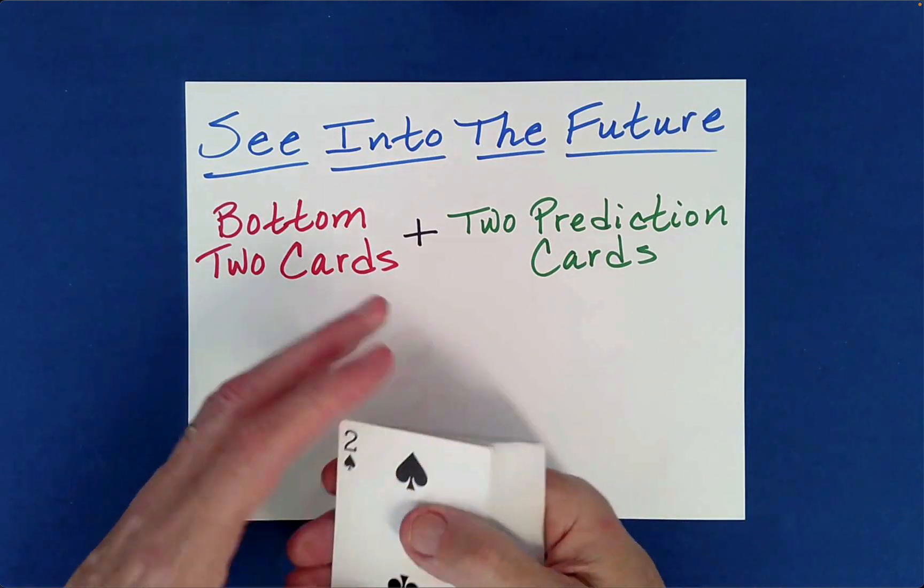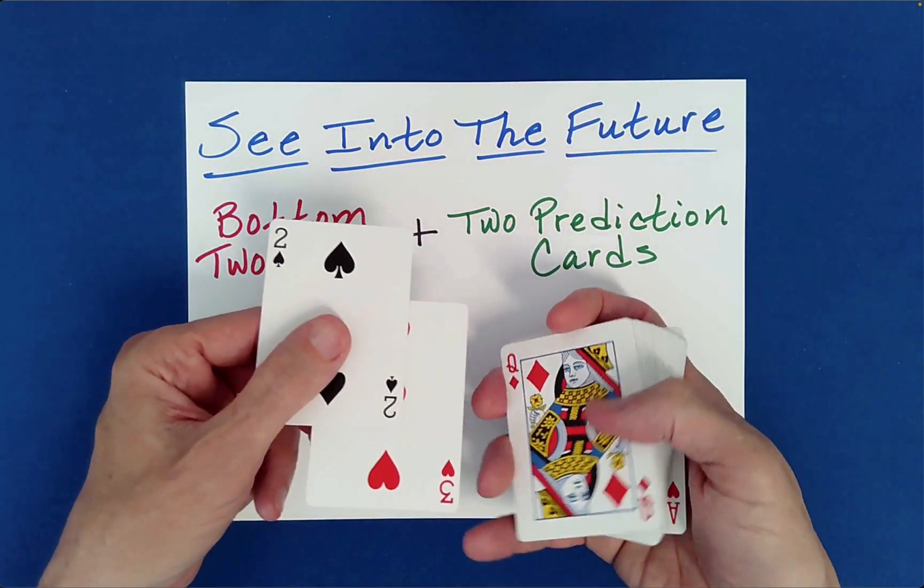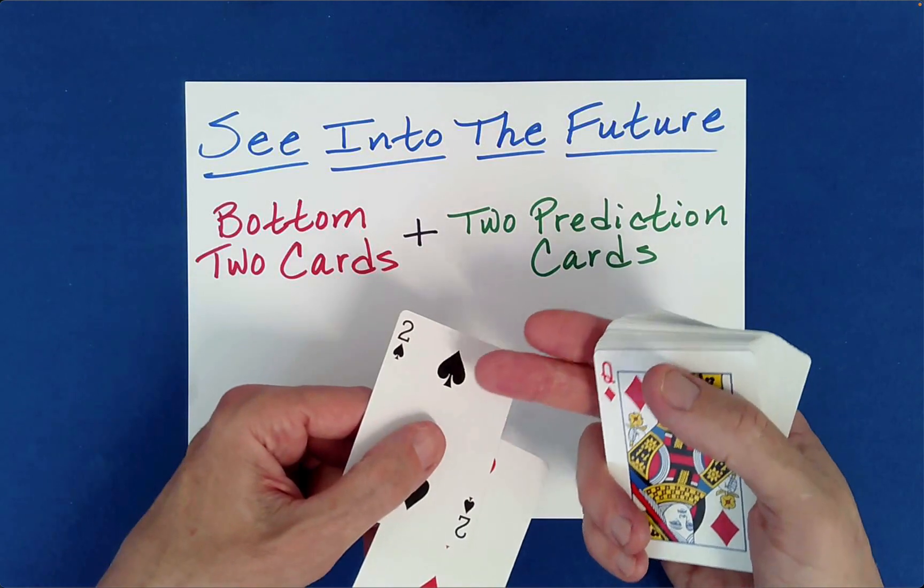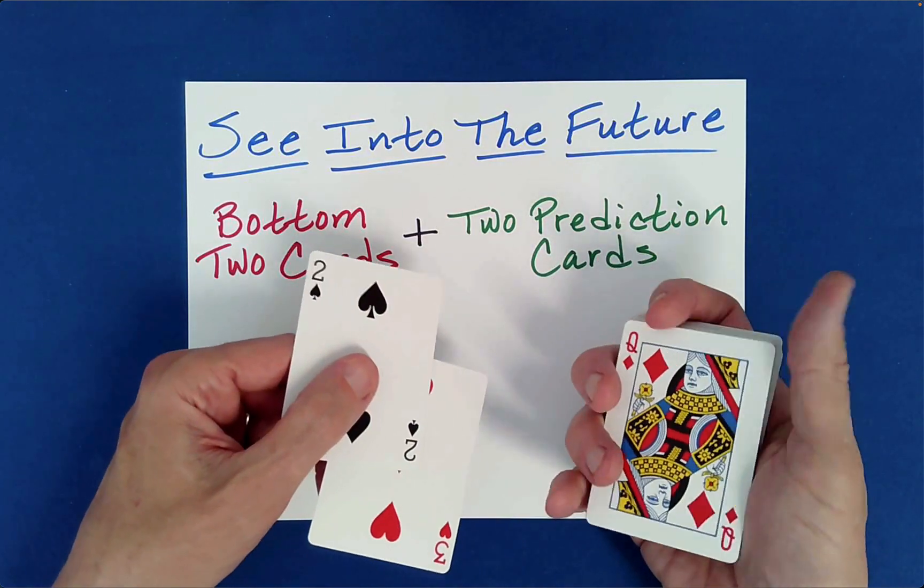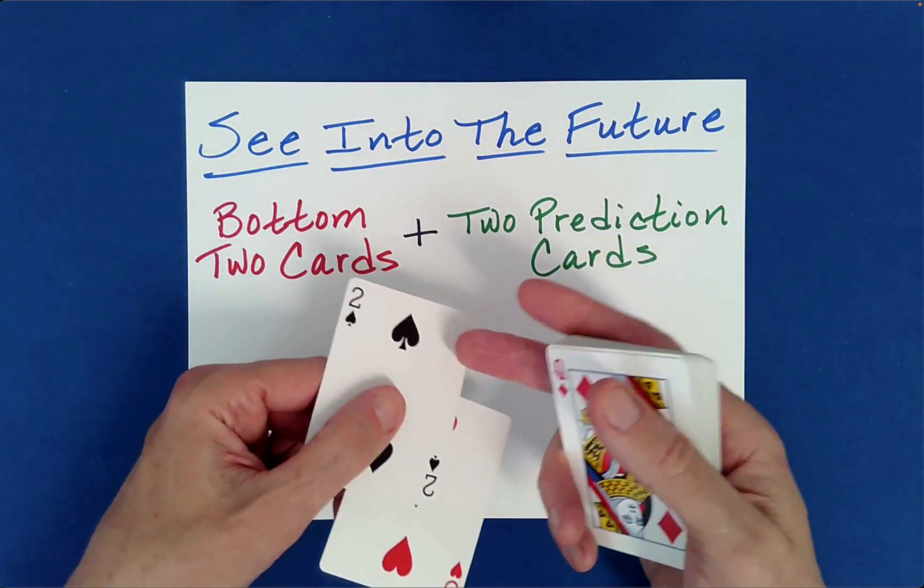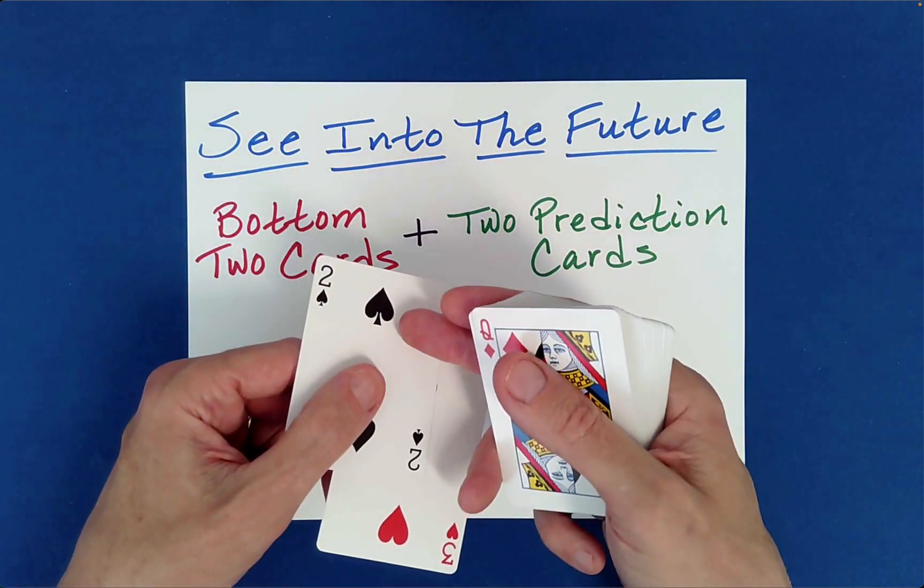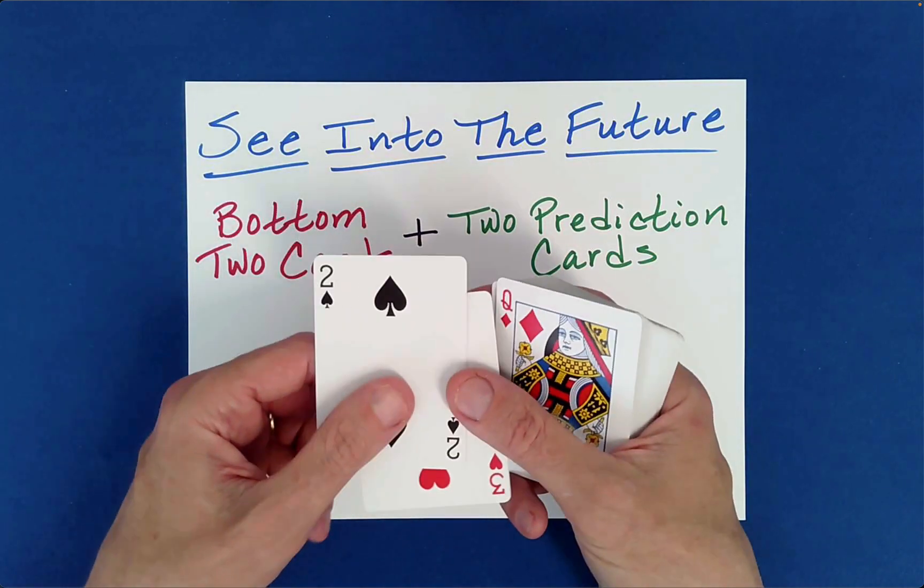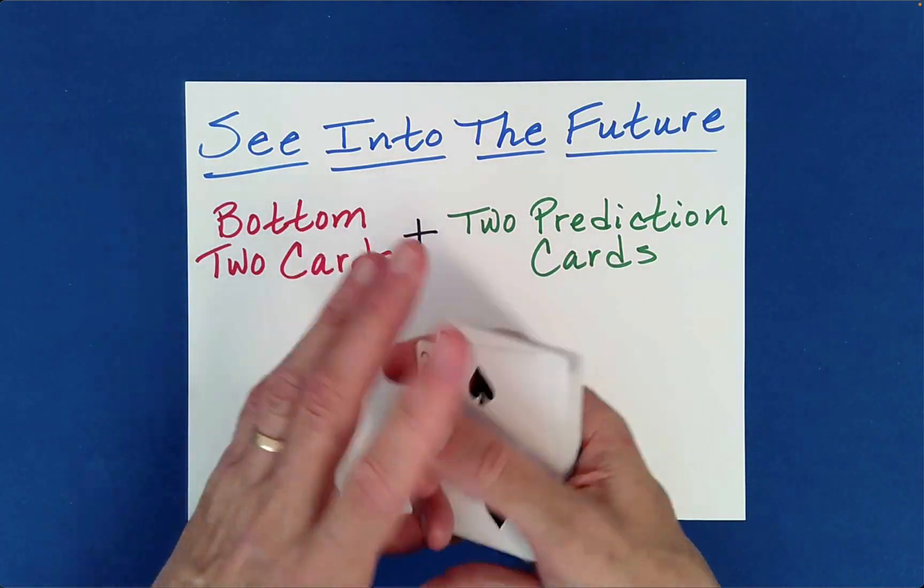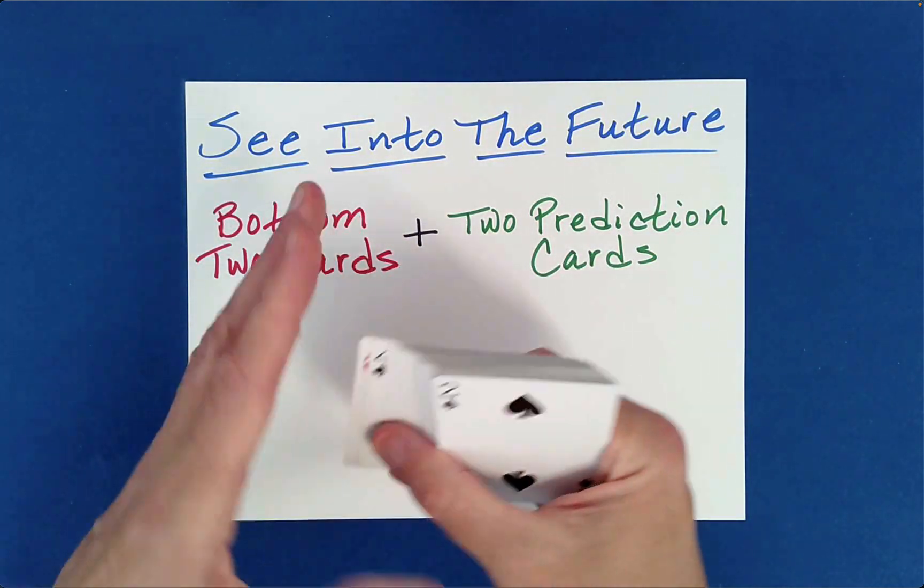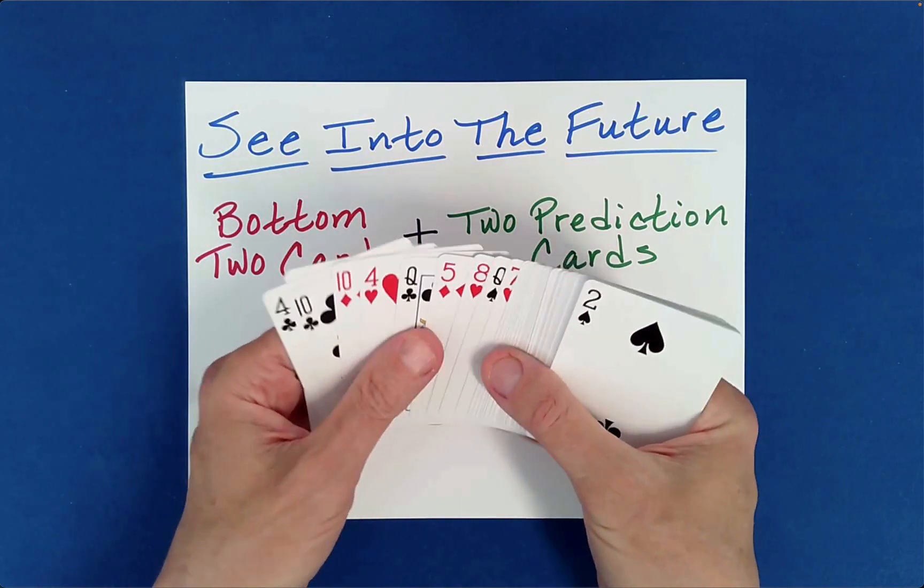Well, just by the name here, you can guess what they are. The two prediction cards are the companion cards to the two bottom cards. Okay, so the two bottom cards, and I'll just show you clearly here. So it's a black two, and this is a good way to think of it. Just think black two, red three, as you're looking for those in just a moment. So black two, red three.